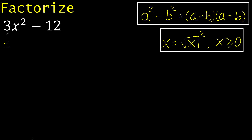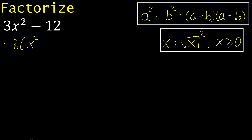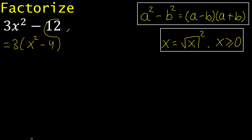x exponent 2 here is 3, because 3 multiplied by x exponent 2 is here. Minus 12 divided by 3 is 4 — 3 multiplied by 4 is 12.